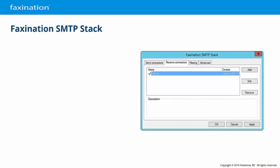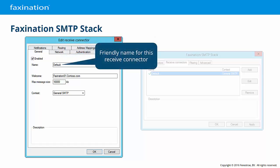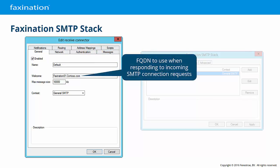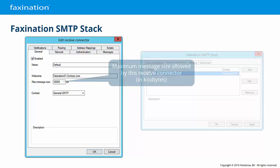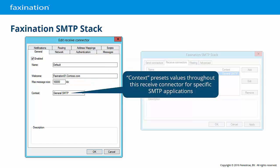Now we'll look at receive connectors. For each receive connector, you may enable or disable the configuration without losing it. Define a friendly name for this receive connector. The Welcome field is the fully qualified domain name that will be used in response to a Hello command from a remote SMTP server. You may set the maximum message size for this receive connector; messages that exceed this size will be rejected at the SMTP level. And as with the send connectors, the Context dropdown allows you to populate the above fields with presets appropriate in specific situations.